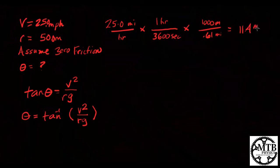So our angle: inverse tangent times 11.4 meters per second squared, divided by the radius 50 meters and acceleration due to gravity 9.81 meters per second squared.